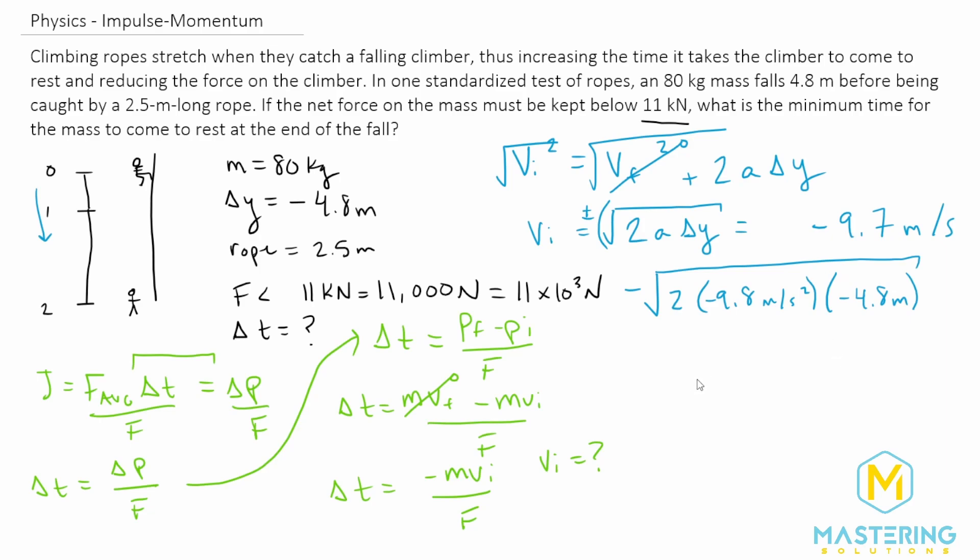So now the change in time is going to be equal to, as we discussed already, the negative mass, which is 80 kilograms, times a negative 9.7 meters per second. So now we're going to divide both of those by the average force as we discussed, which is 11 times 10 to the third newtons.